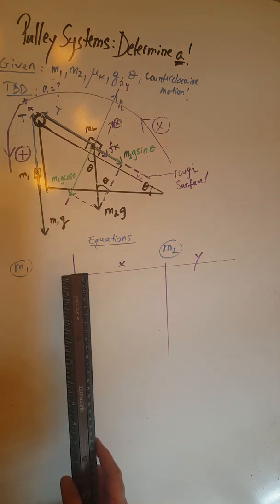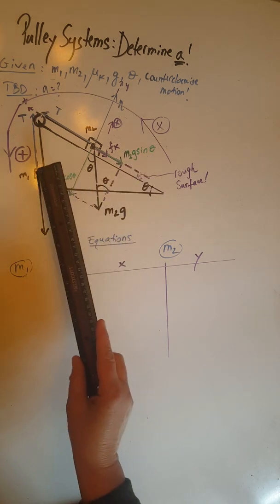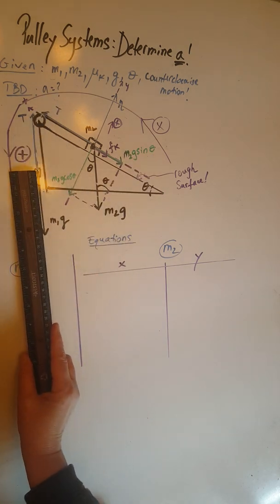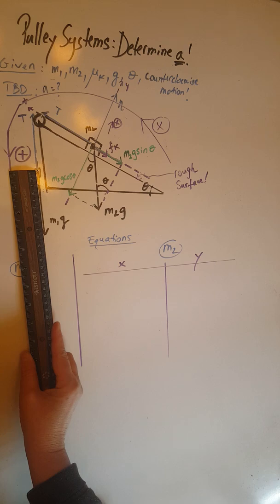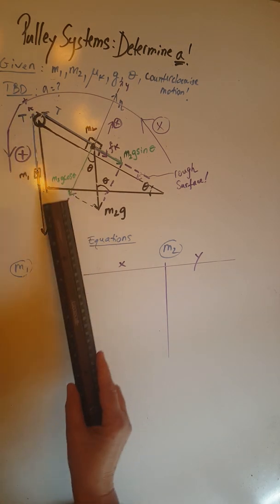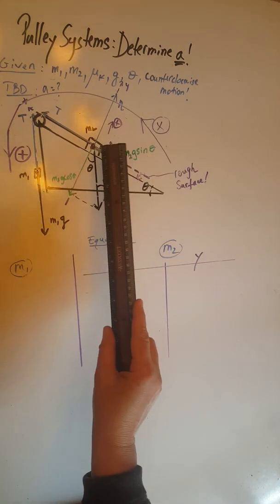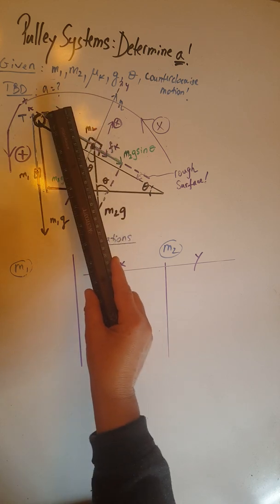Now with respect to the unbalanced forces for m1, m1g must be greater than T. Well, m1g is 8.5 centimeters while T is 8. 8.5 is greater than 8, so that's good.